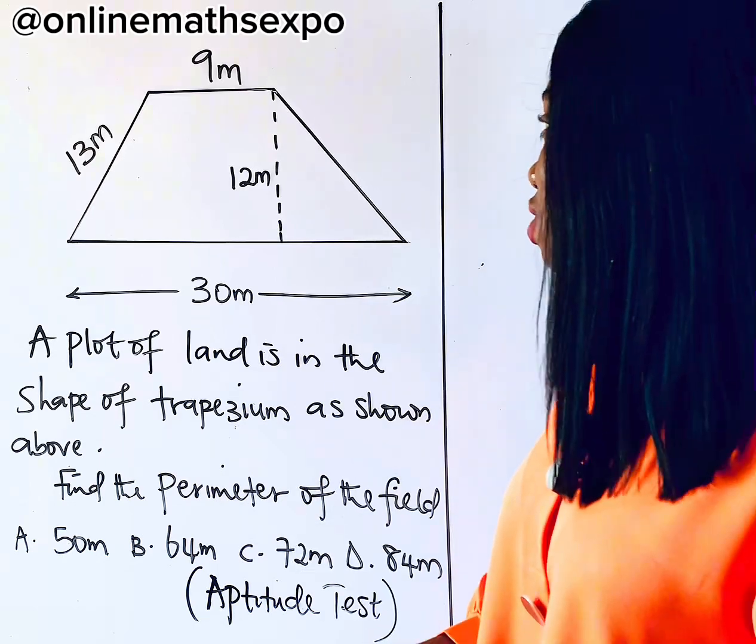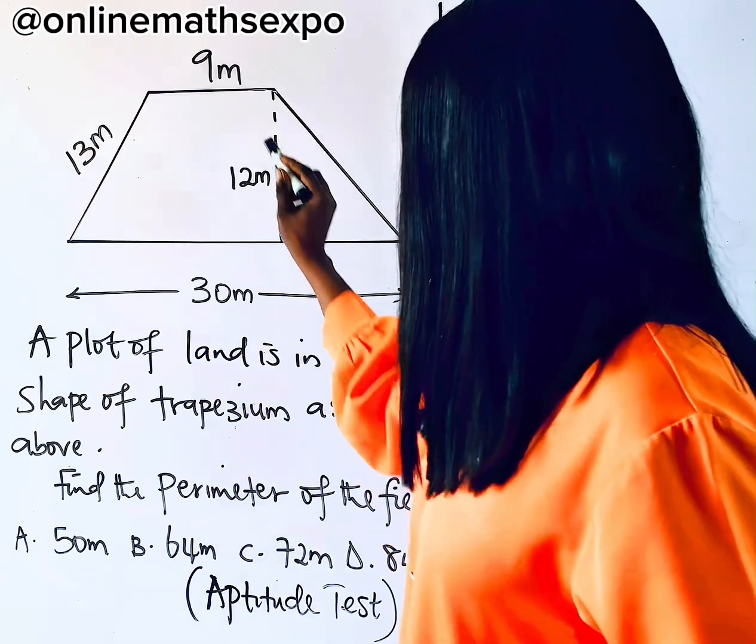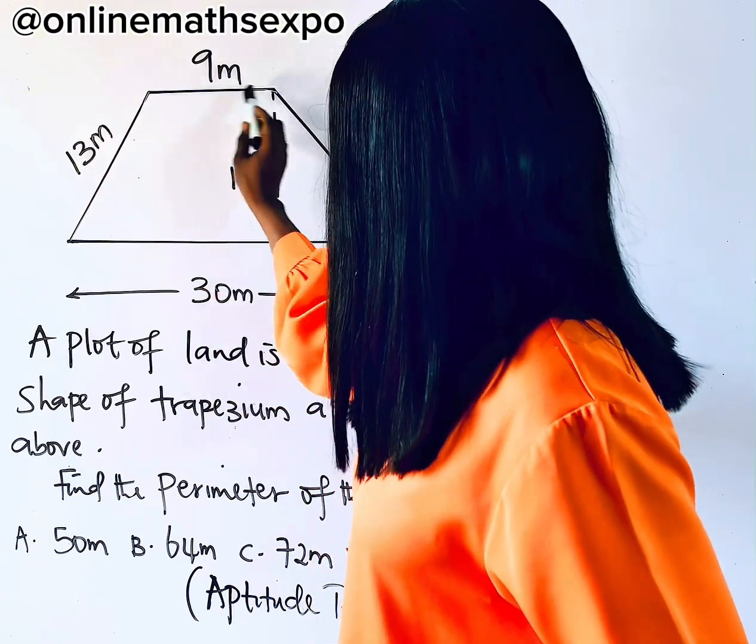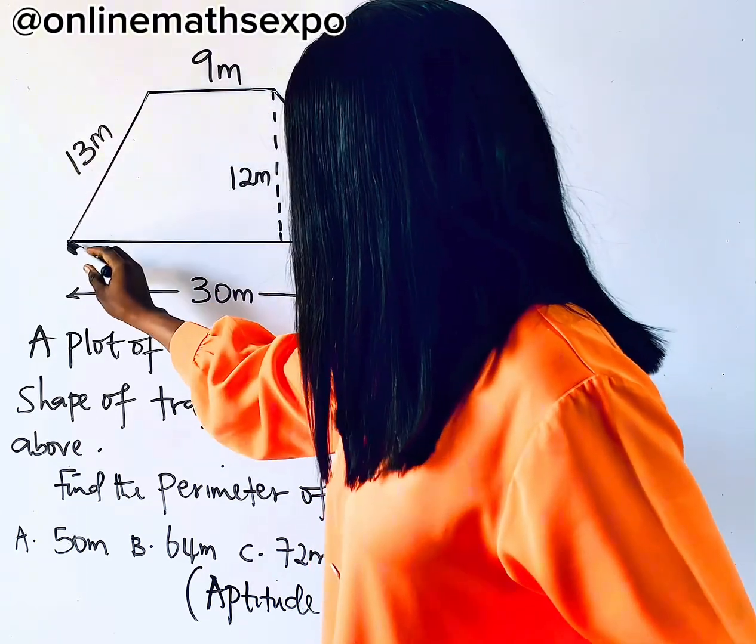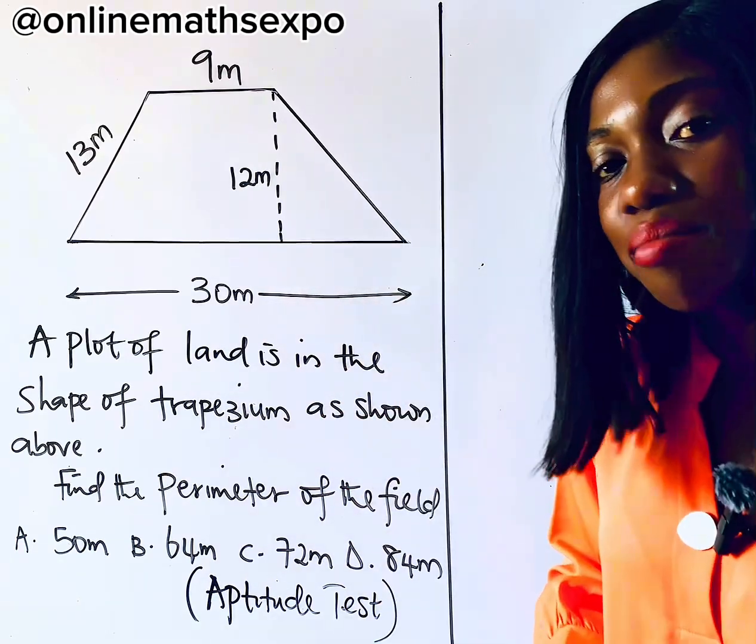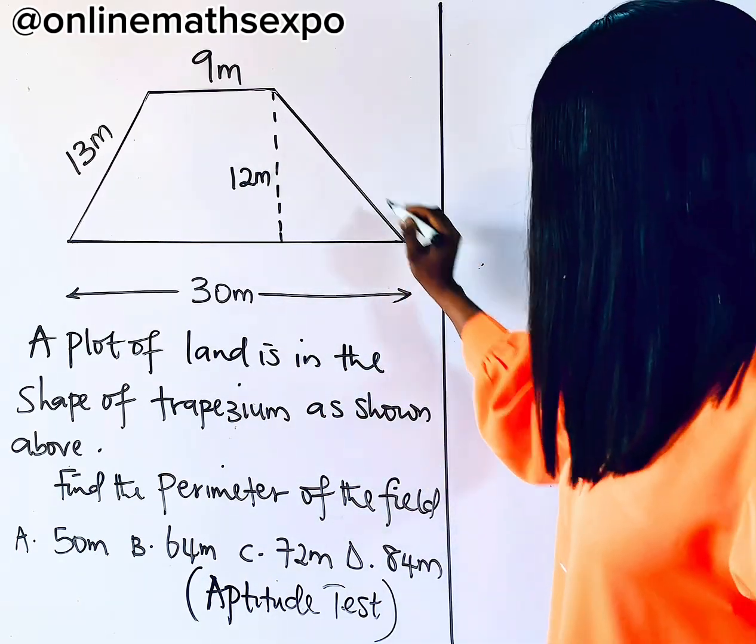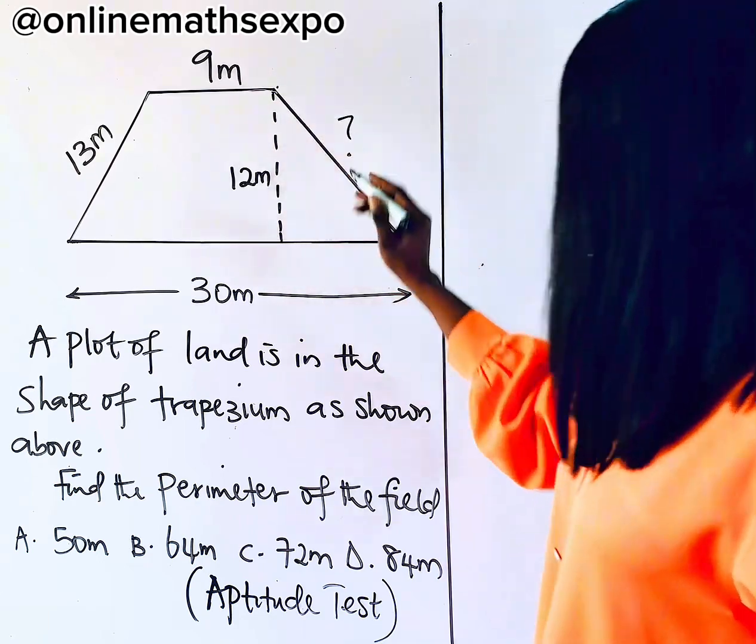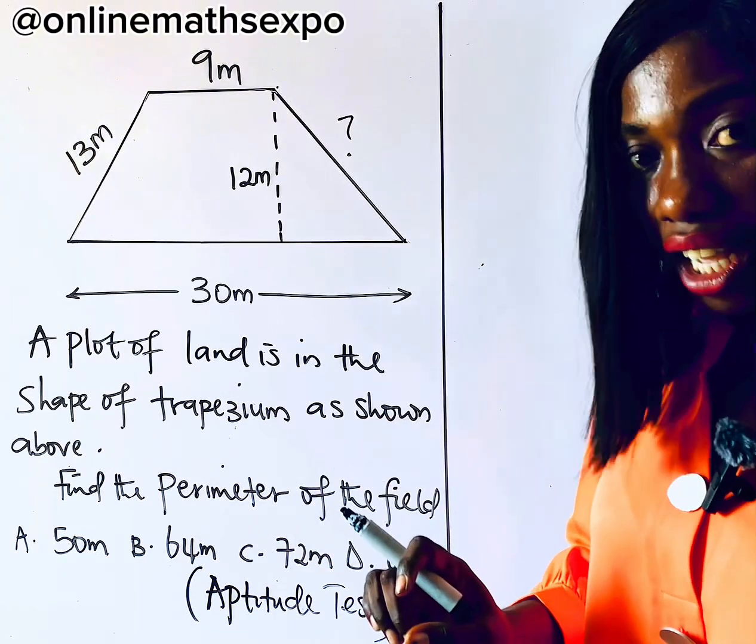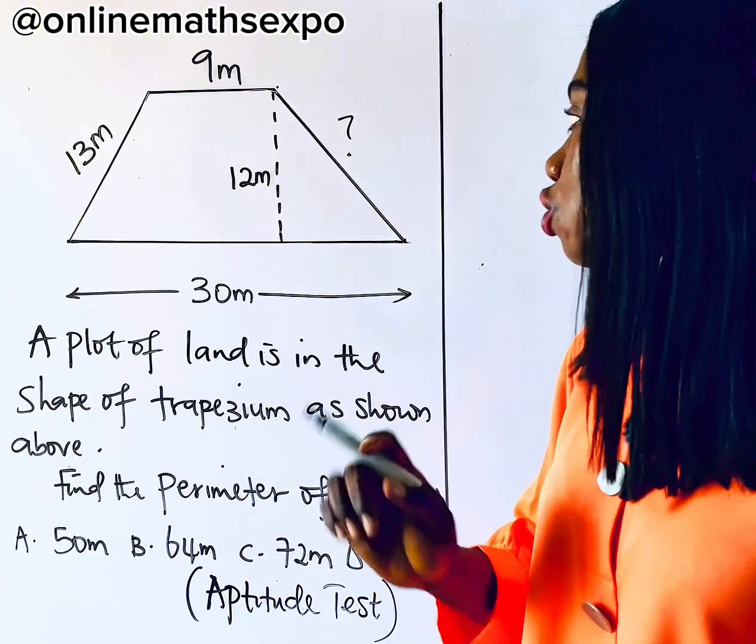What it means also is that for us to get the perimeter, we need to know this length. We need to know this length, which from here to here is 9. From here to here is 13. From here to here is 30. But the problem is what is from here to this point? We don't know. So this is what we want to find. When we find it, it gives us the perimeter. Now, to find this, what do you do?